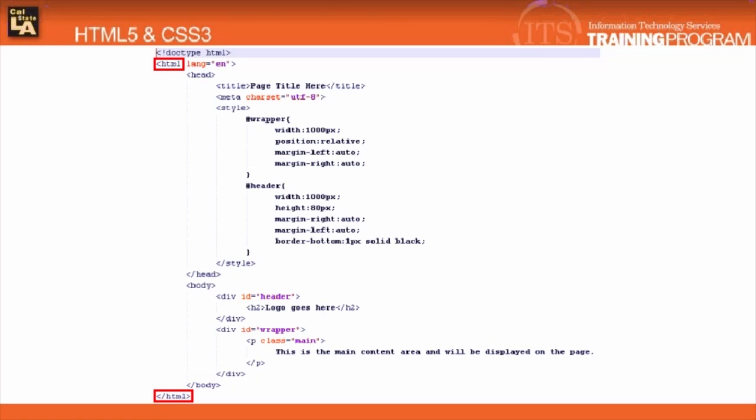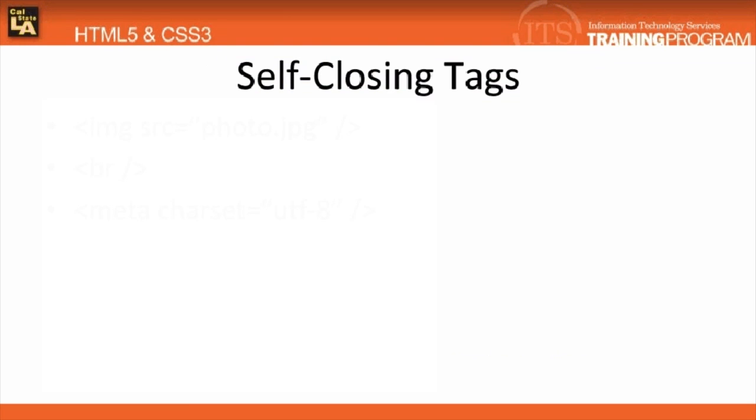From there, the HTML tag contains the two main page elements, the head and body tags. Then, the head and body contain their own child elements. While most of the tags come in pairs with separate opening and closing tags, certain tags, such as the image, break,